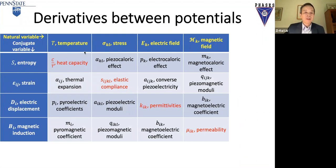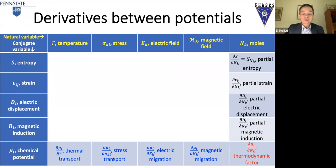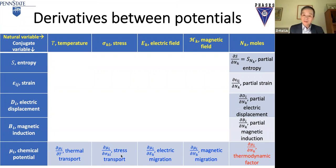Now consider the derivatives between different potentials — the cross phenomena. The chemical potential can be affected by temperature (thermal transport), stress (stress-driven diffusion), electric migration, or magnetic migration — these are all cross phenomena where two potentials interact to drive a process. In this case, diffusion is driven by chemical potential gradients, and other potentials affect the chemical potential through cross phenomena, producing a wide range of effects including cross-diffusion between elements — for example, silicon strongly affects the carbon chemical potential in steel.